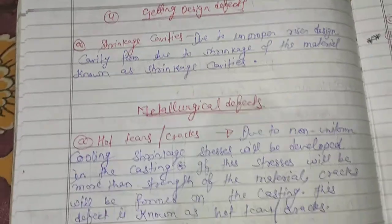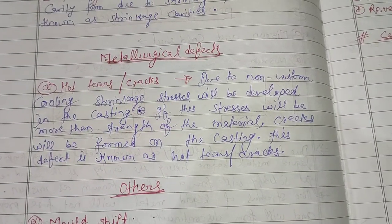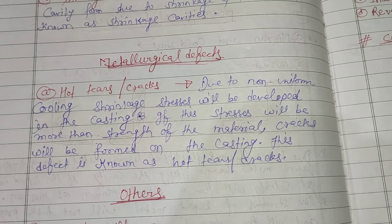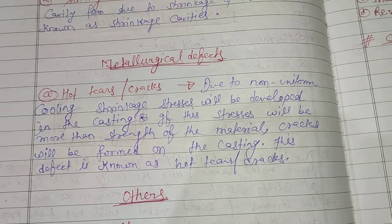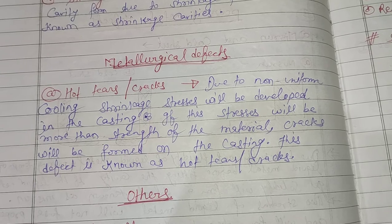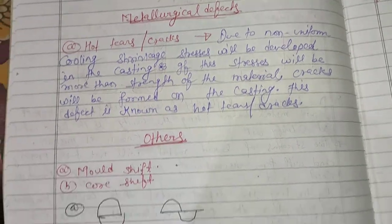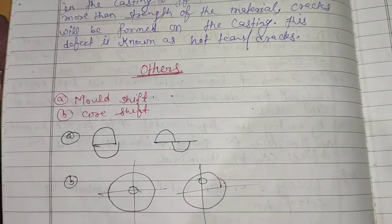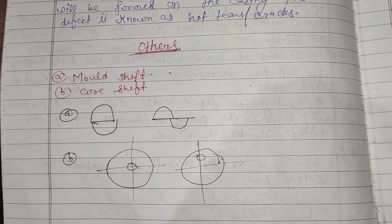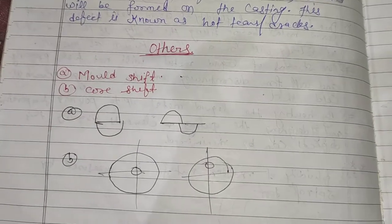Metallurgical defects include hot tears and cracks. Due to non-uniform cooling, shrinkage stress develops in the casting. If the stresses exceed the strength of the material, cracks form, and this defect is known as hot tears or cracks. Another defect is mold shift or core shift, which can be seen in the diagram.